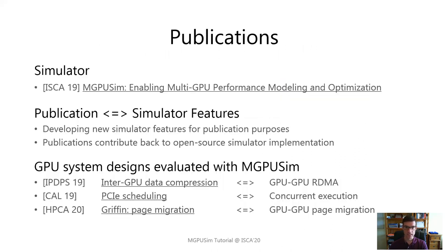Besides the ISCA publication, recent publications made possible thanks to NGPU-SIM include work at IPGPS, CAL, and HPCA, contributing back to extend NGPU-SIM with new features such as concurrent execution and GPU-to-GPU page migration. It is evident that NGPU-SIM is growing quickly, and our simulator is clearly aiding researchers in validating architectural design ideas for optimizing both single-GPU and multi-GPU implementations.